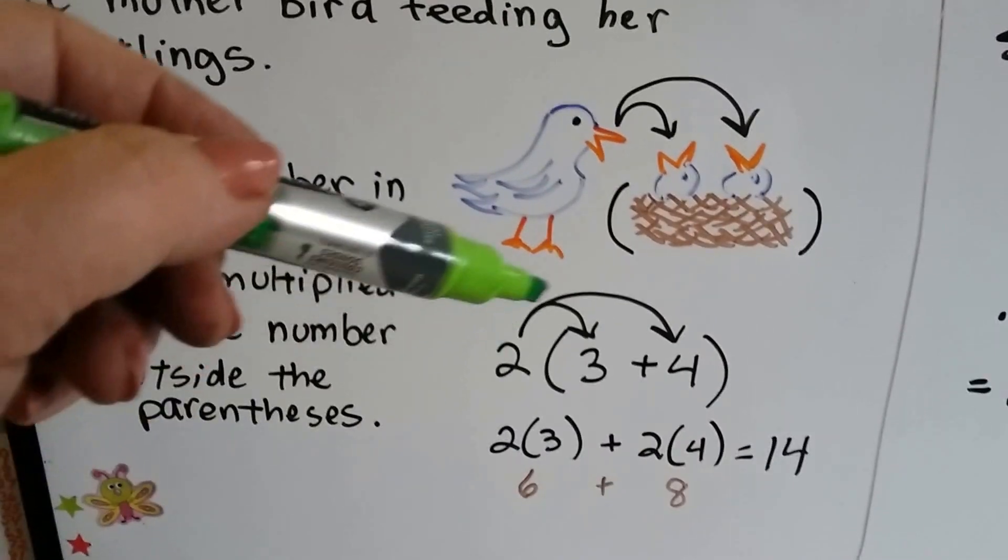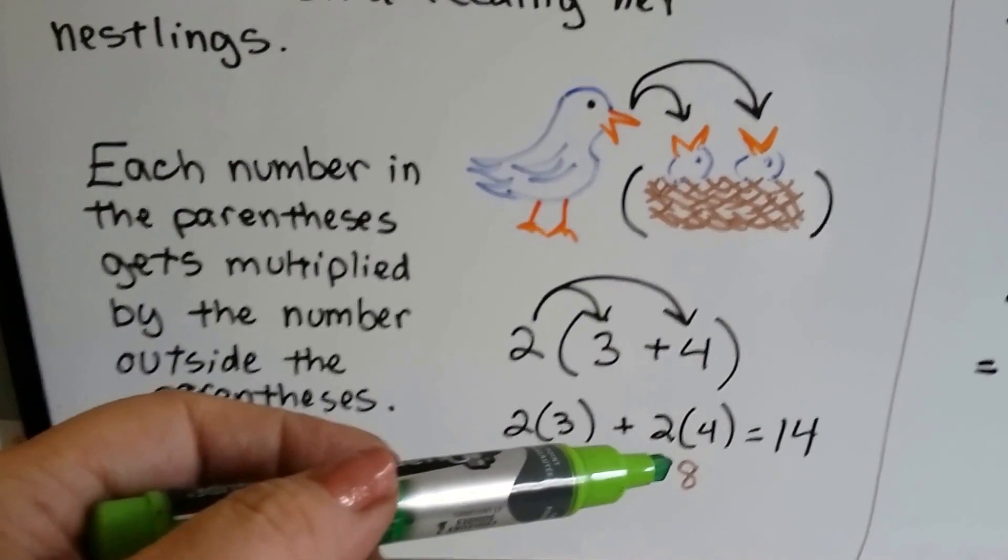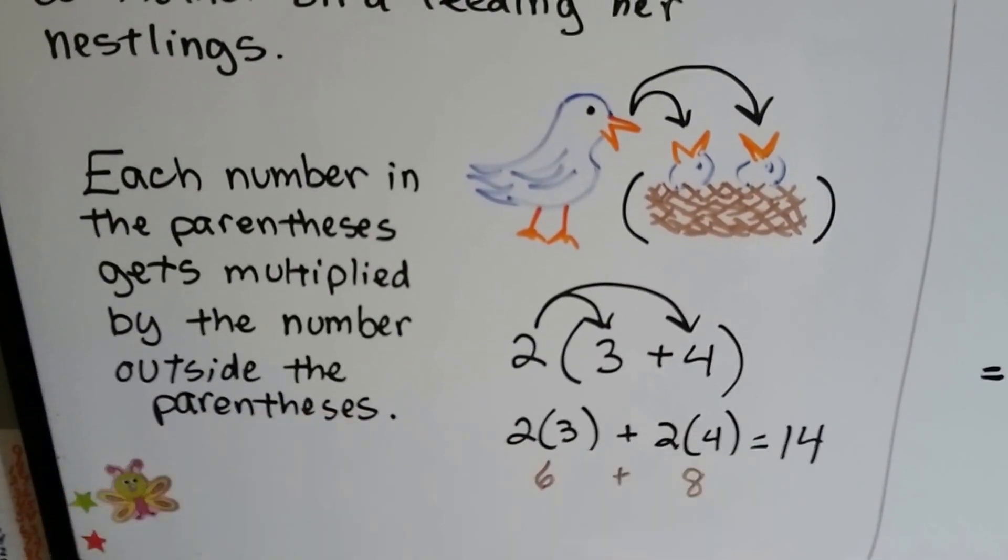Same with the number. 2 times 3 is then added to 2 times 4. 2 times 3 is 6 plus 2 times 4 is 8. 6 plus 8 is 14.